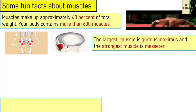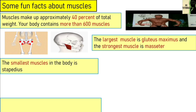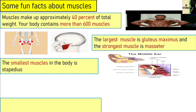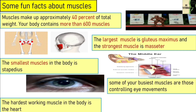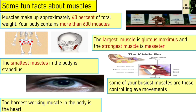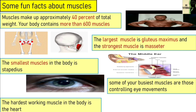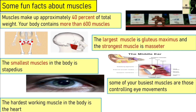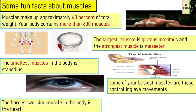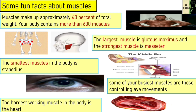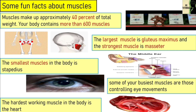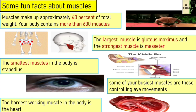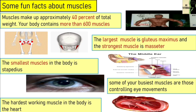The smallest muscle in the body is the stapedius, located in your middle ear — it is less than 1 millimeter long. Some of your busiest muscles are those controlling eye movements. The hardest working muscle in your body is the heart: it pumps out 71 grams of blood at every heartbeat, pumps at least 9,450 liters of blood daily, and has the ability to beat over 3 billion times in a person's life.